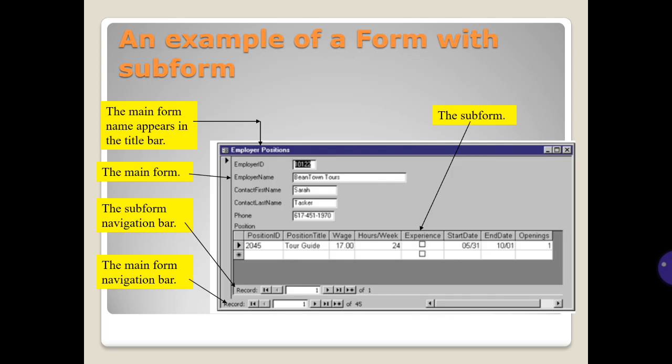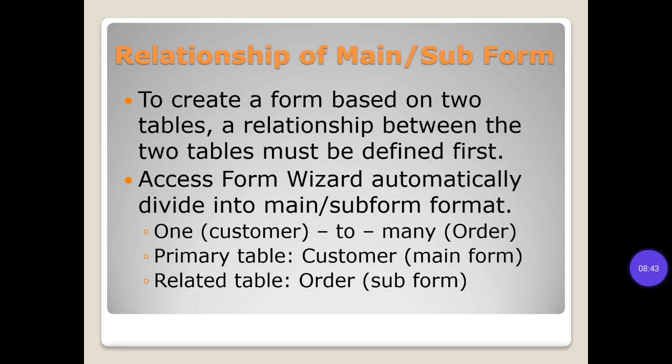In an example of a form with sub form: the main form name appears in the title bar, with a main form navigation bar and a sub form navigation bar. To create a form based on two tables, a relationship between the two tables must be defined first. Access Form Wizards automatically divide into main or sub form format — for example, one customer to many orders: primary table customer becomes the main form, and related table order becomes the sub form.